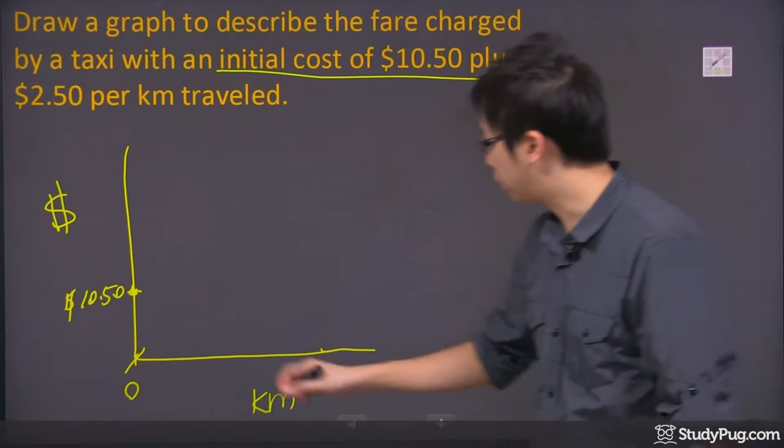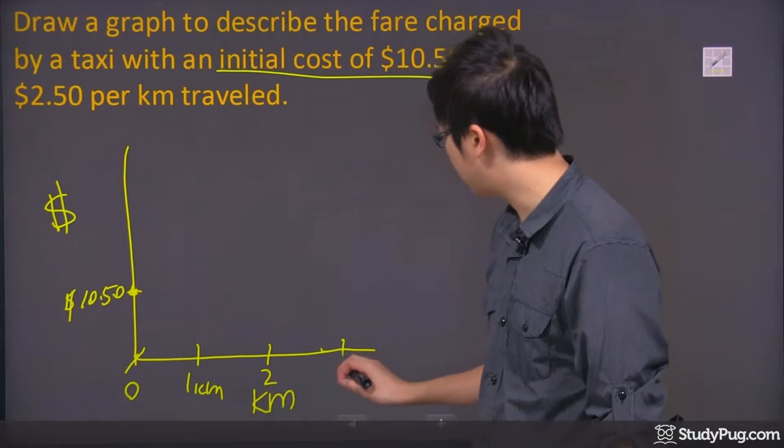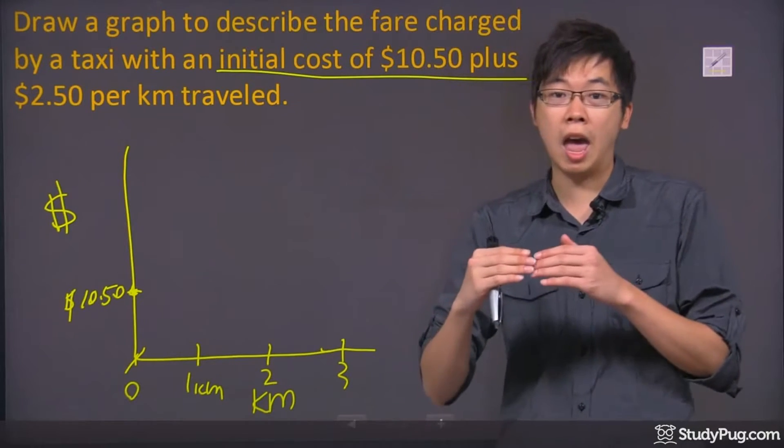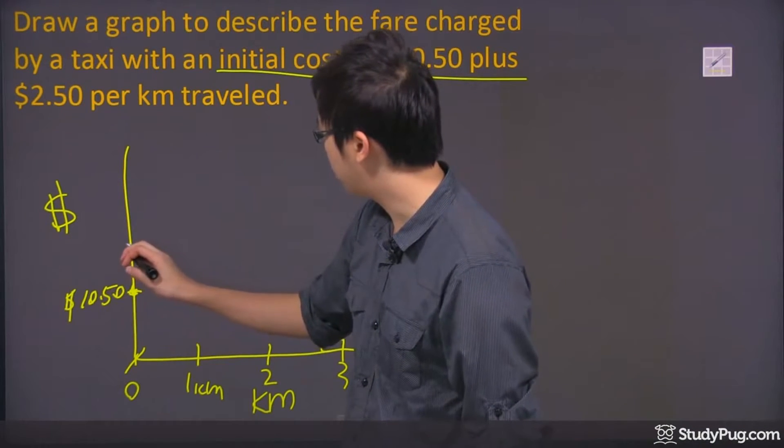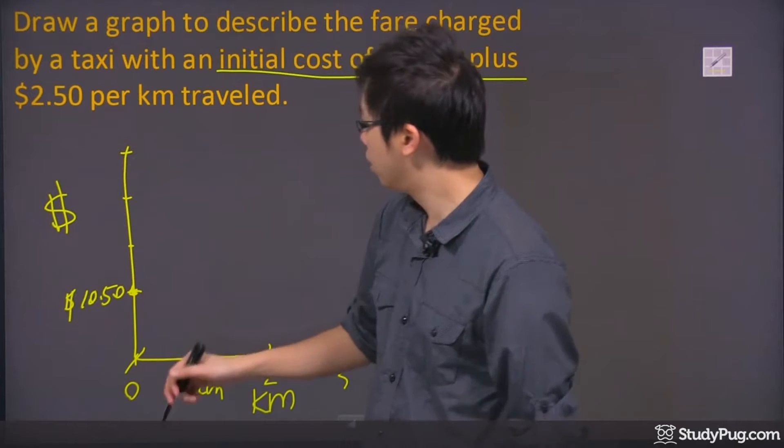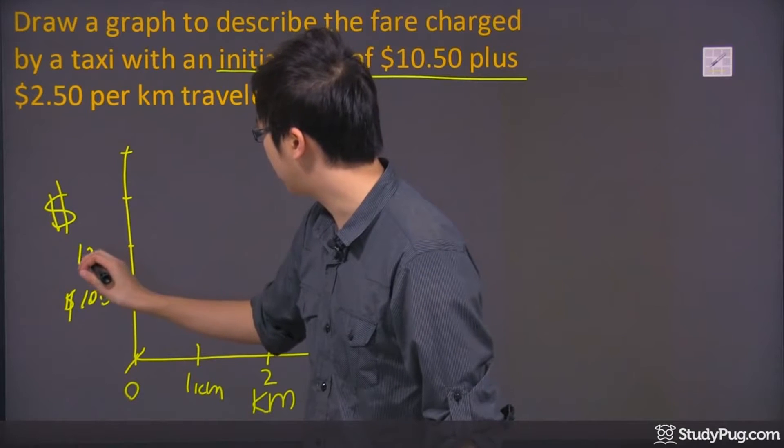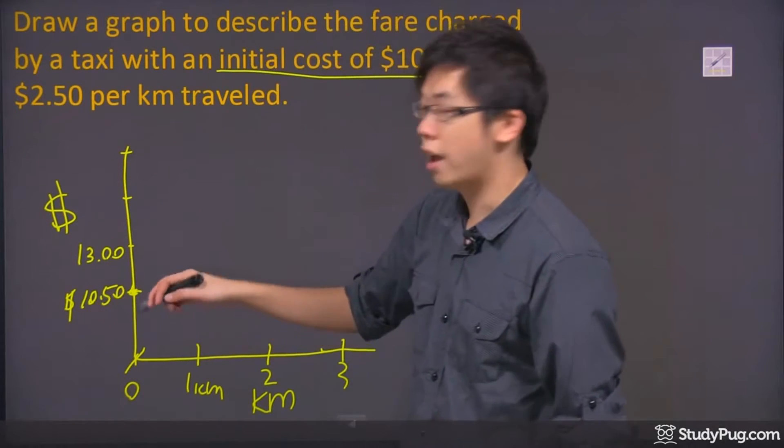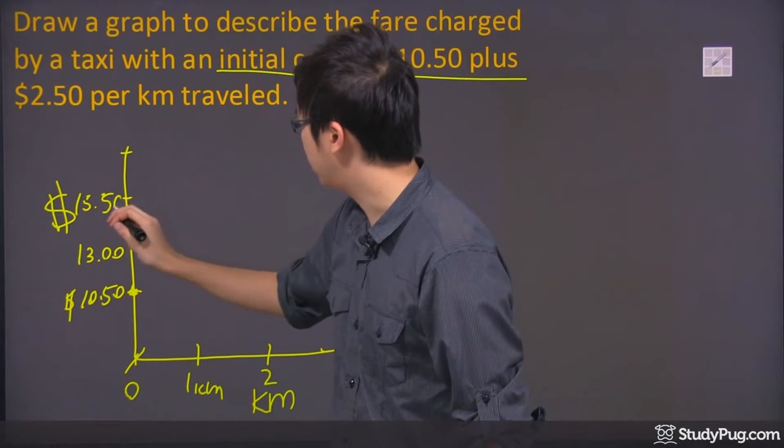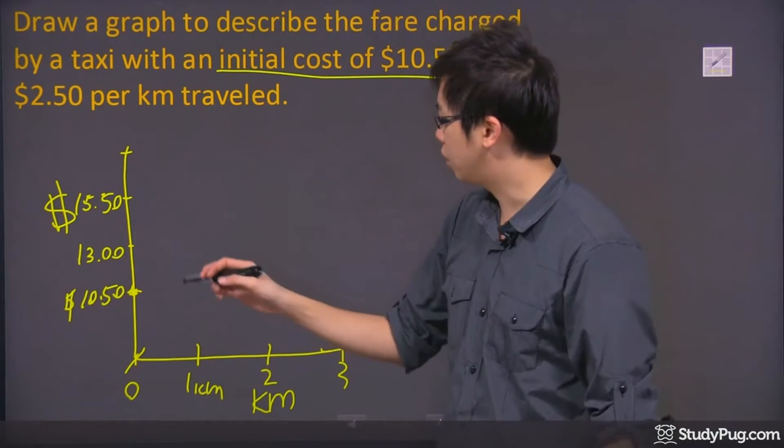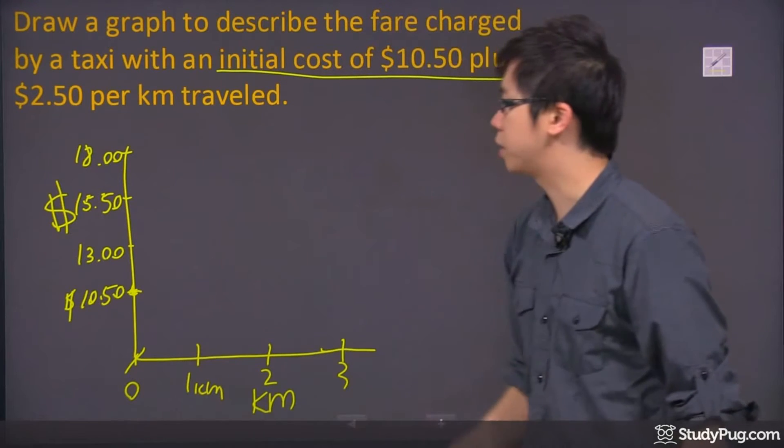But every kilometer you've traveled, so let's go ahead and put down one kilometer and let's go down two right there and put a three there. You're going to be adding another $2.50 on top of that. So if that's 10, let's just go ahead and put a couple dots right here. So $10.50, if I add $2.50 to that, it would be $13. And then if I add another $2.50, it will be $15.50 right there. And if I add another $2.50, it would be $18 over here. So those are the money signs over there.